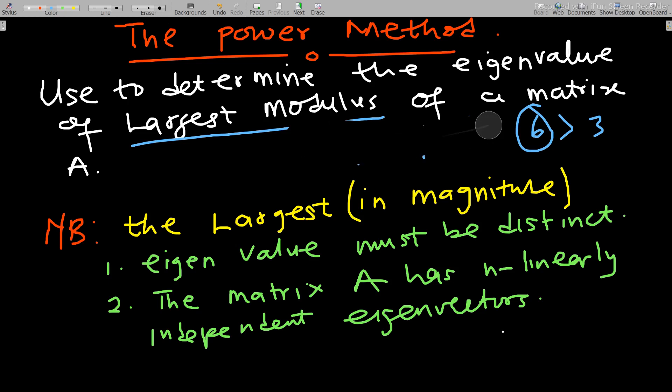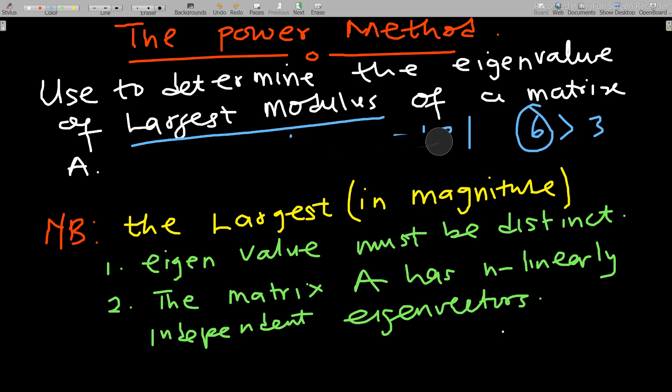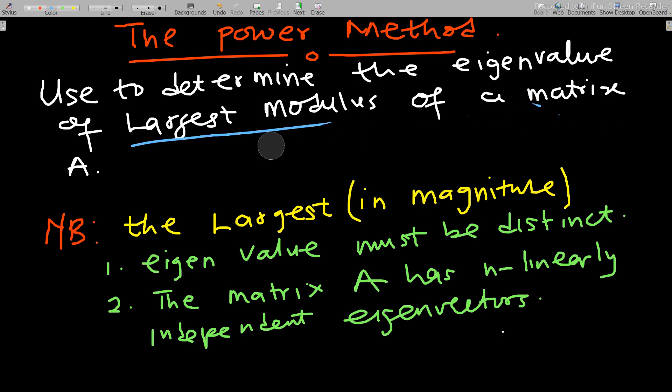With this, how do we go about it? I'll show you how to use this method to find it, but I want us to look at some key points here. You should note that the largest eigenvalue in modulus or in magnitude must be distinct. So to use this method, we are supposed to get distinct eigenvalues so that we can see the largest among them. If you have repeated eigenvalues, this wouldn't work.